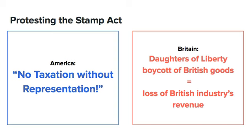Protesting the Stamp Act: America protested by claiming that there should be no taxation without representation — the idea that if there's going to be an internal America-only tax, then they should be able to represent themselves in the House of Commons in Britain where the tax was formulated. That was their main protest.